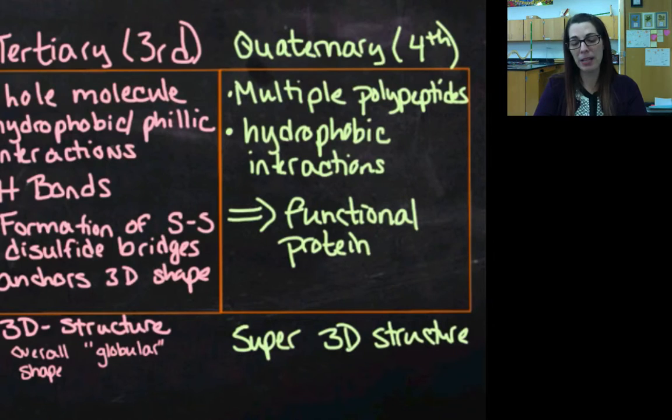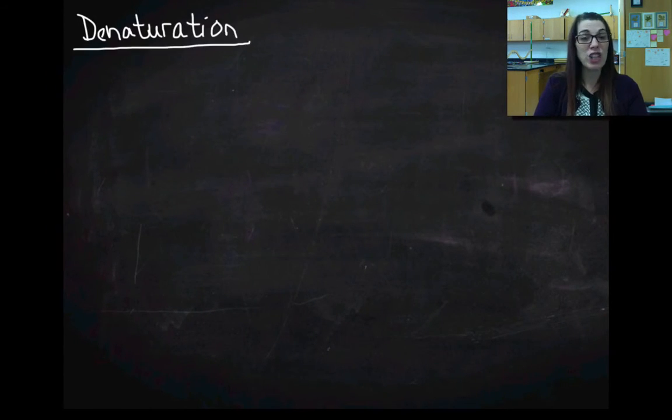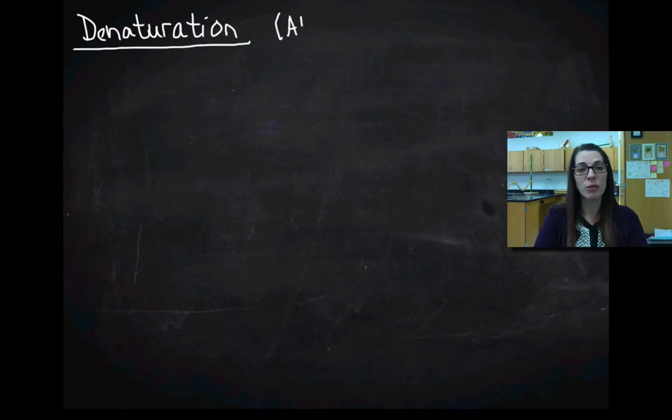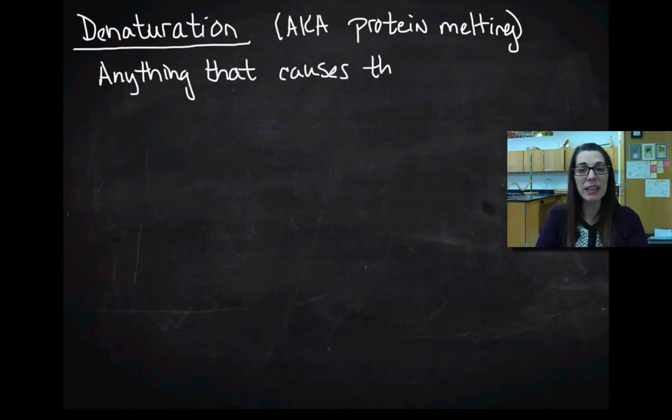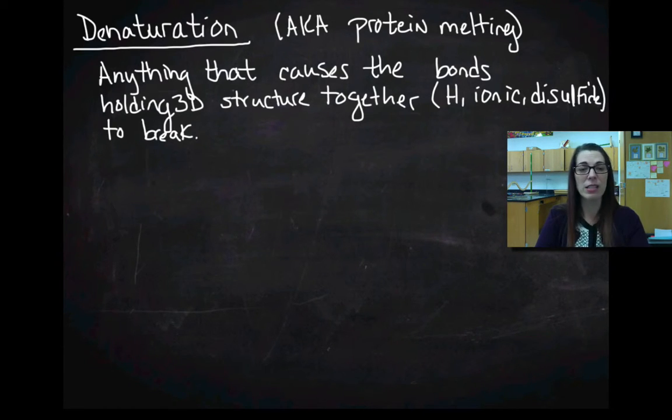Now what we need to talk about is what happens when I denature a protein. So when I talk about denaturation, that's going to be when I change the shape of a protein. That's something we're going to talk about in class, like melting the protein or melting the protein space. But it's not always has to do with melting. Denaturation is anything that causes the bonds holding the 3D structure together to break. And those bonds can be your hydrogen bonds, the ionic bonds, the disulfide bonds. Anything that causes those bonds between the 3D structure, anything in that secondary or tertiary structure, anything that breaks those bonds is going to be denaturation.